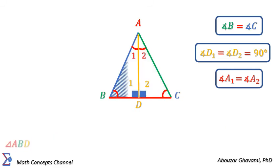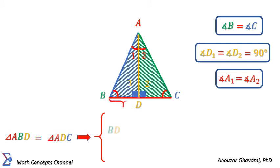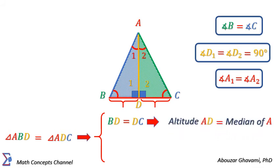The right triangles ABD and ADC are congruent with each other. Therefore, we have corresponding sides BD and DC are equal to each other. That means altitude AD is also median of vertex A dropping on side BC.